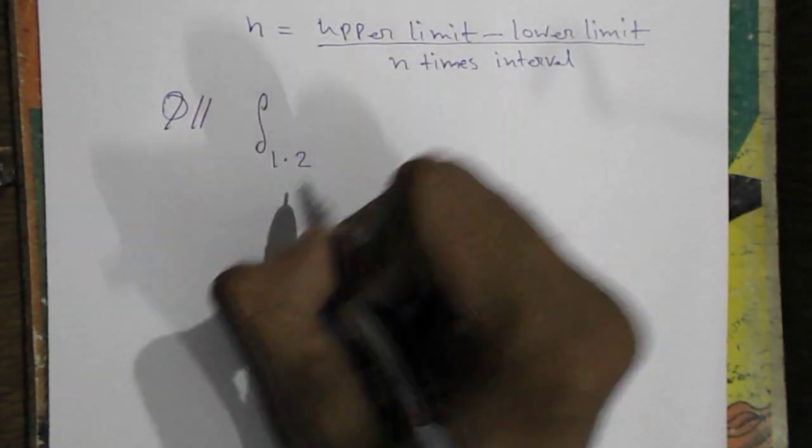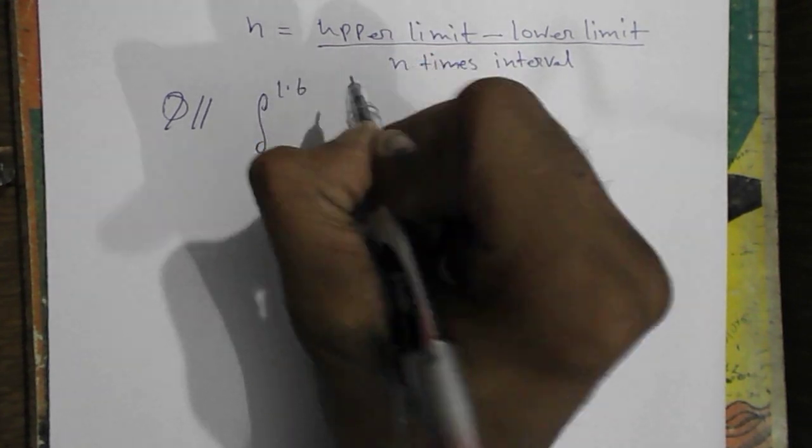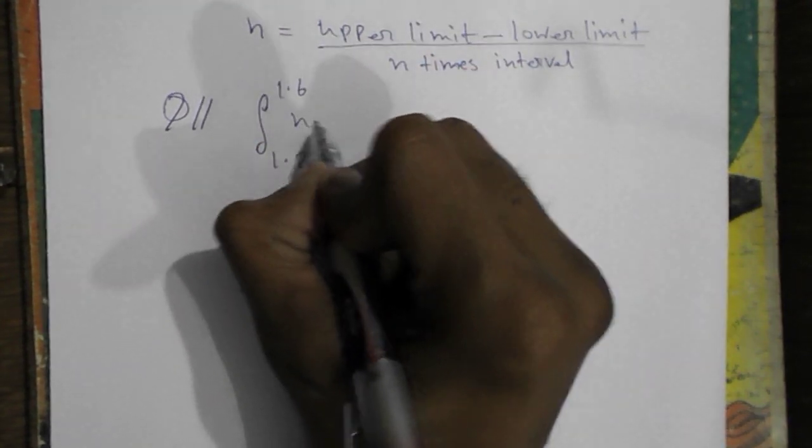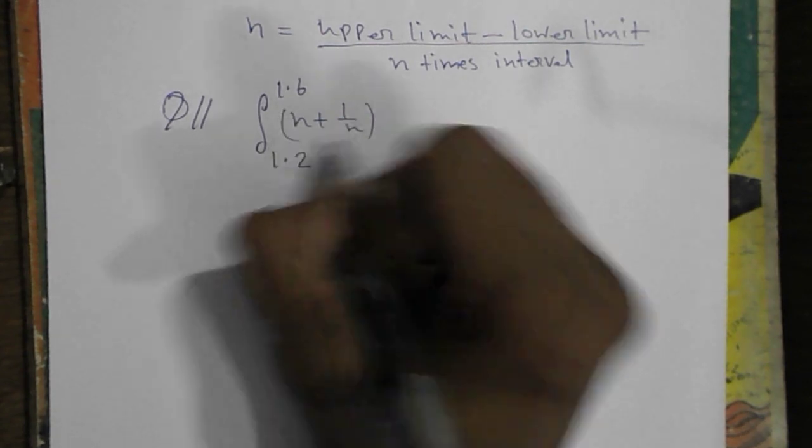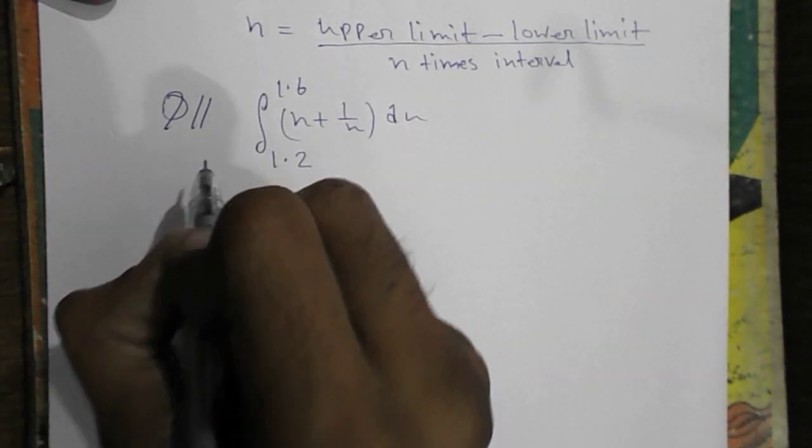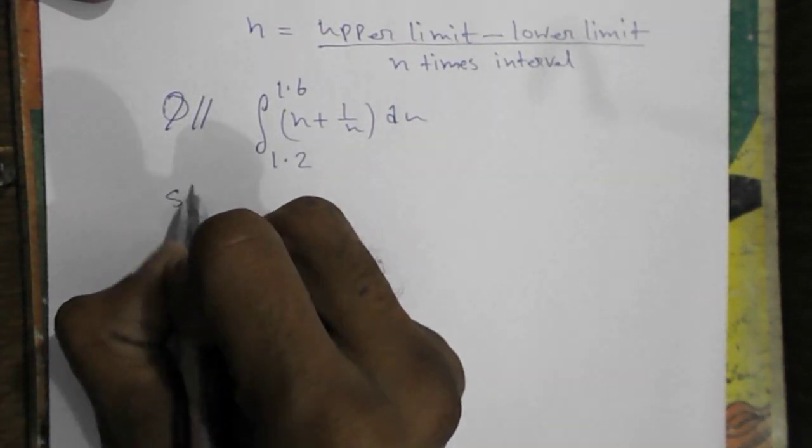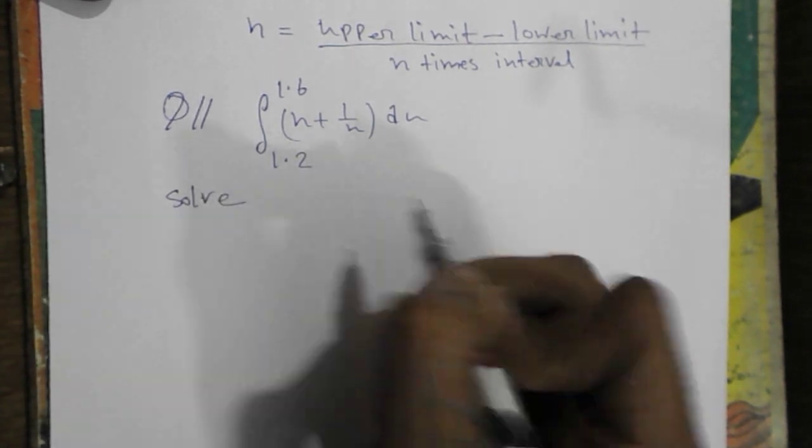Lower limit 1.2, upper limit 1.6. The actual sum is here x plus 1 by x dx. The question is solve...